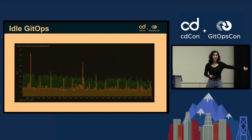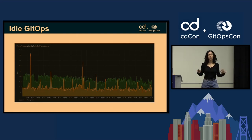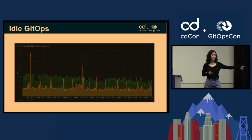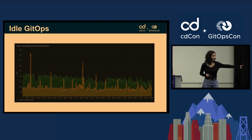Looking at the idle GitOps dashboard — over two hours we can see the flux-system namespace and the Argo CD namespace without anything to reconcile. We can see more energy consumption at a base level, and we can also see that Flux has some spikes. What might cause those spikes? It's related to the customized controller — so there's already a slightly different pattern we can observe.